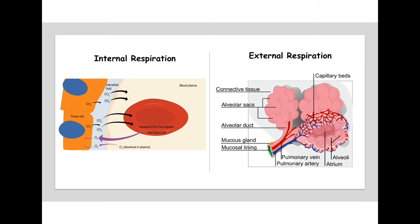Now let's talk about respiration — why do we breathe? There are two forms: internal respiration and external respiration. In internal respiration, we're looking at gas exchange between tissues and your red blood cells — carbon dioxide goes to your red blood cells while oxygen goes to the tissues. In external respiration, oxygen comes in through your lungs, where you get that initial gas exchange in the alveoli with their surrounding capillaries, and after that it can go to the rest of your body.